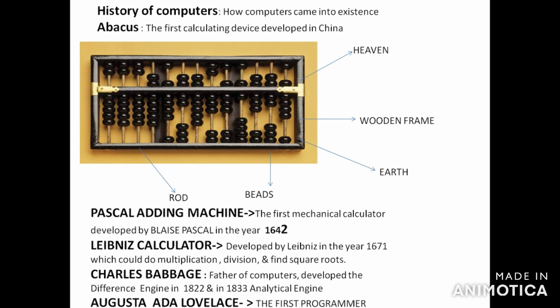Then came Charles Babbage, known as the Father of the Computer — a British mathematician. He invented the working model of the mechanical computer called the Difference Engine in 1822 and the Analytical Engine in 1833. Next is Lady Augusta Ada Lovelace, the first programmer, who suggested binary data storage — that is, zero and one — instead of the decimal number system.